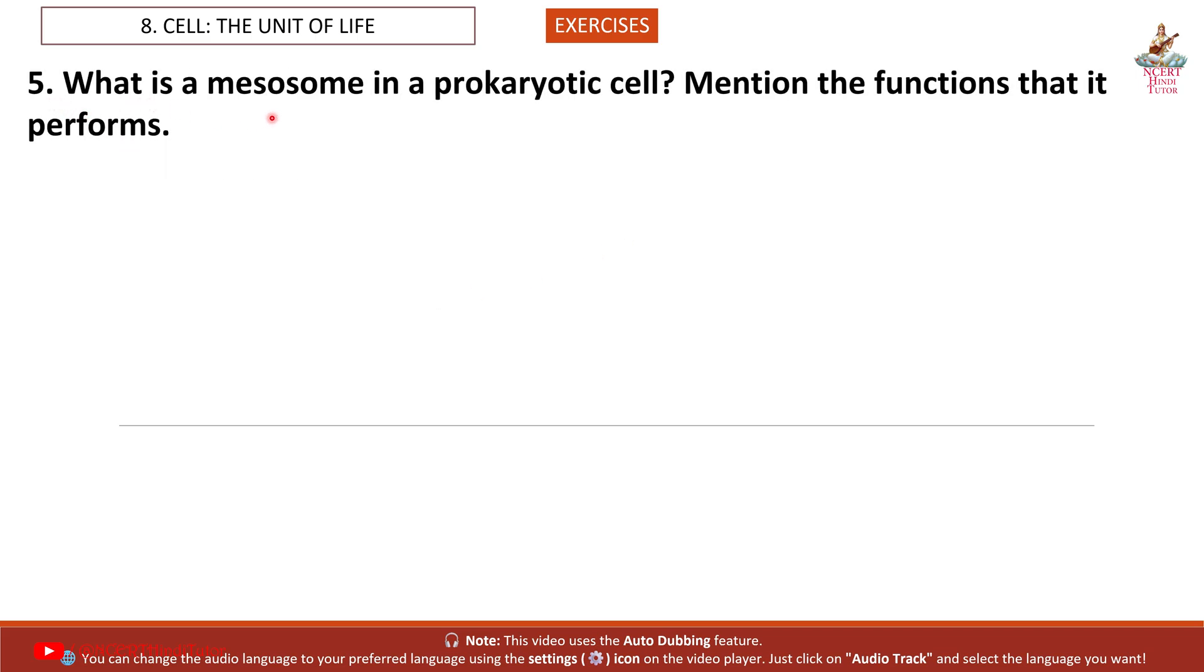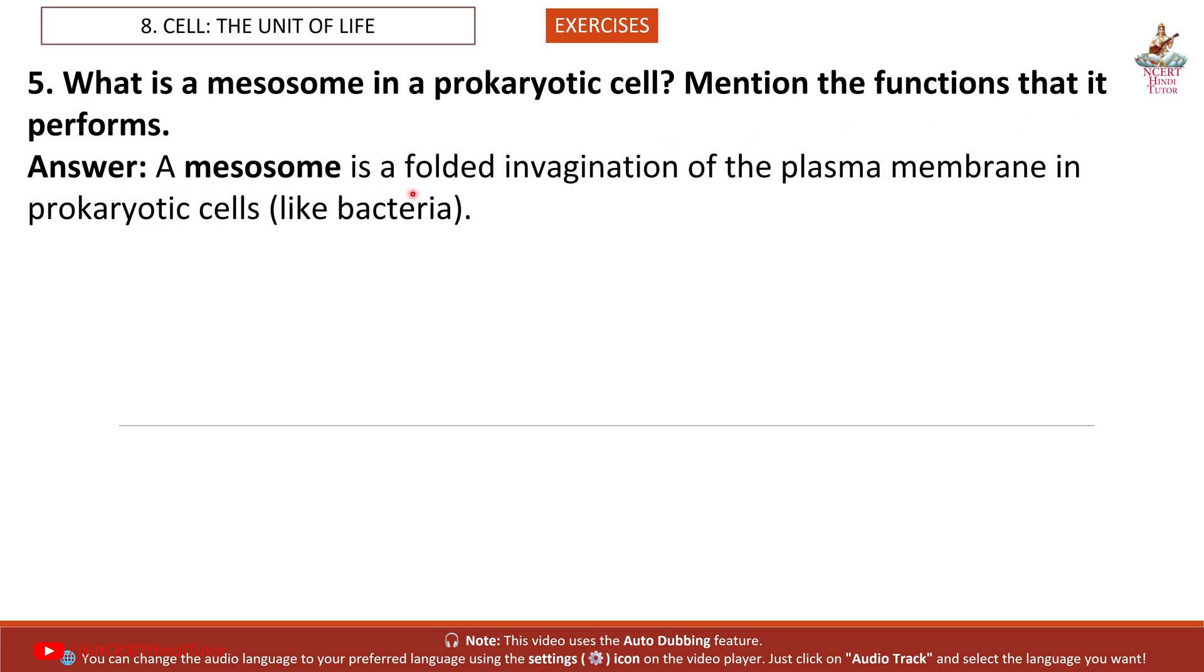Question 5: What is a mesosome in a prokaryotic cell? Mention the functions that it performs. Answer: A mesosome is a folded invagination of the plasma membrane in prokaryotic cells like bacteria. Functions: